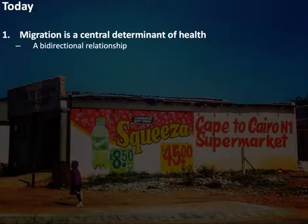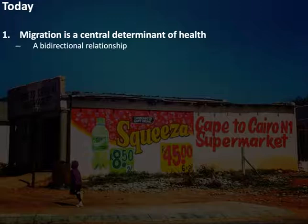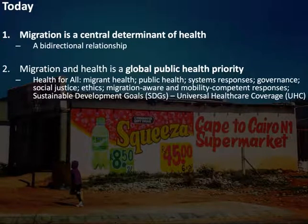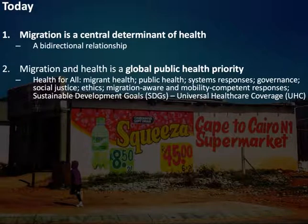Firstly, it's about emphasising the fact that migration is a central determinant of health, and we're going to talk about the bidirectional relationship between migration and health. We're going to cover the fact that migration health is a global public health priority, and what that means for current global health targets, particularly the SDGs and universal health care coverage.